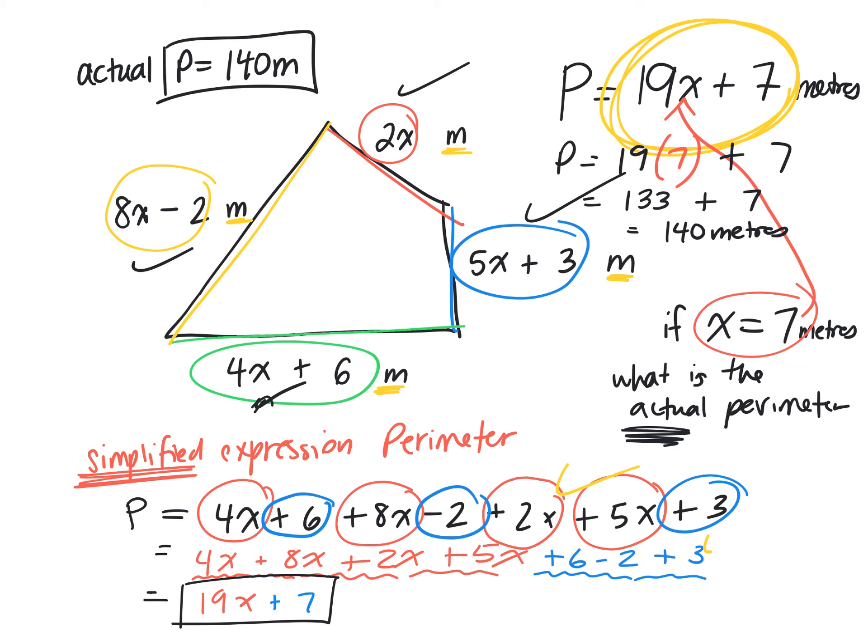On a quiz, you would get 1, 2, 3 marks for simplifying it and 1, 2 marks for finding the actual perimeter.